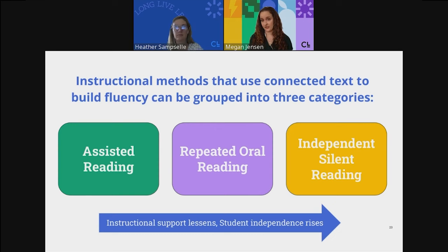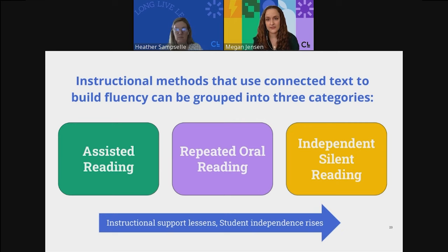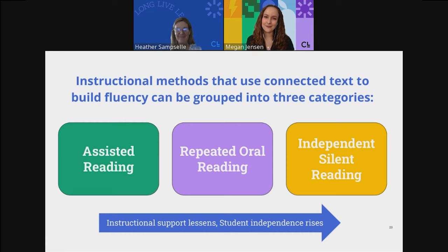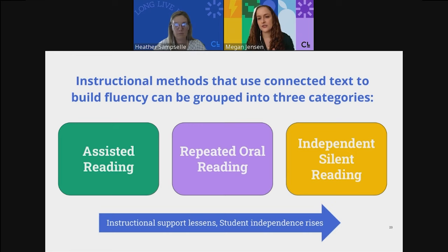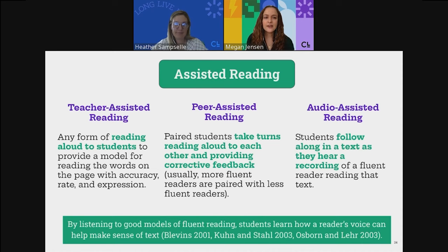Instructional methods using connected text fall into three categories. On the far left is assisted reading; in the middle, repeated oral reading; and on the far right, independent silent reading. The arrow on the bottom indicates the degree of student independence — as you move from left to right, you're removing instructional supports. The teacher is no longer modeling; peers are not modeling; the student reads on their own. Student independence rises as we move from assisted reading all the way toward the ultimate goal: fluent silent reading, the way we all read as adults.